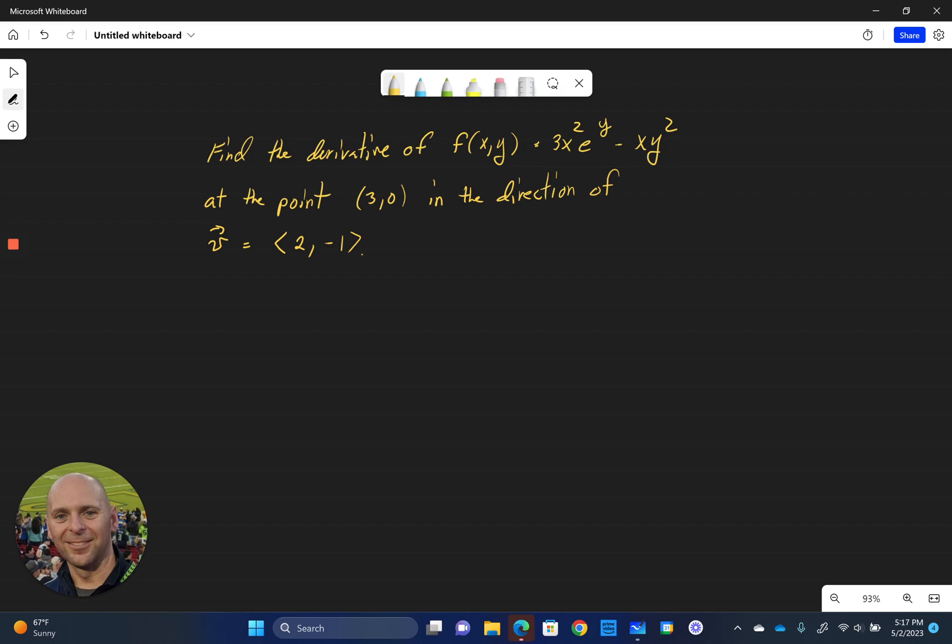So here we're going to take the derivative of our function. We're going to do it at the point (3, 0) and in the direction of this vector v.